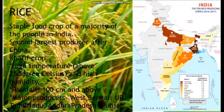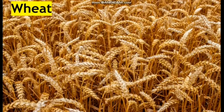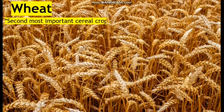Major rice producing states are West Bengal, Uttar Pradesh, Tamil Nadu, Andhra Pradesh, and Punjab. In areas of less rainfall, it can be cultivated with the help of irrigation, like in Punjab and Haryana.